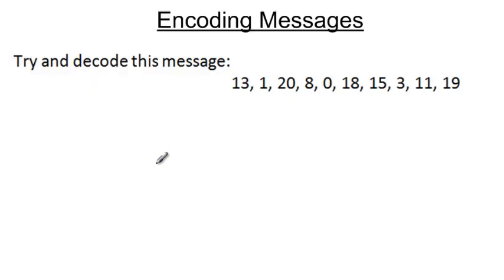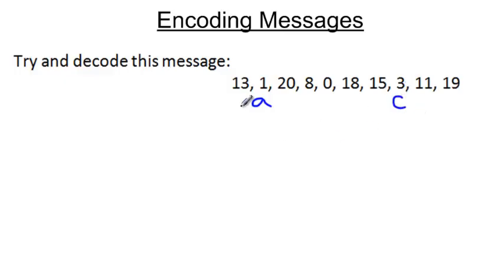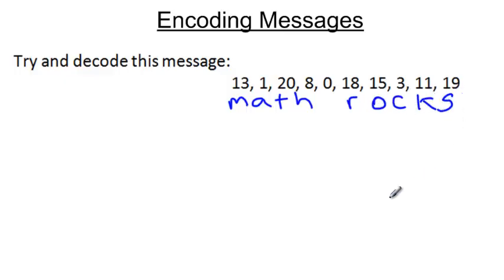Some of you have figured out that these numbers represent letters — it's just as simple as the alphabet. The first letter is A, so the number 2 would be B, the number 3 would be C, and as you continue through the alphabet you'd get 'math.' The zero actually stands for a space, and then you get 'rocks.' Math rocks. Cool message.